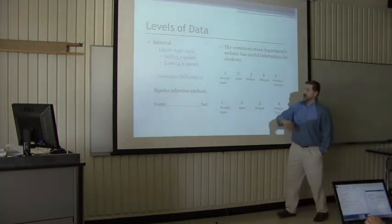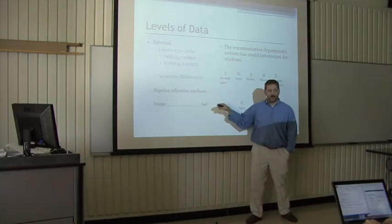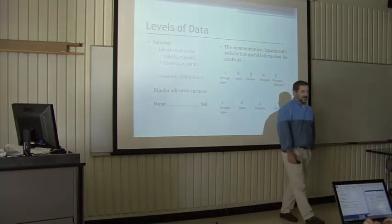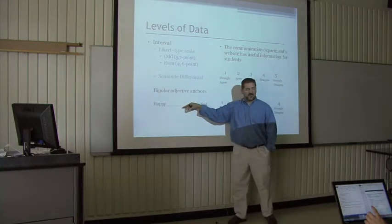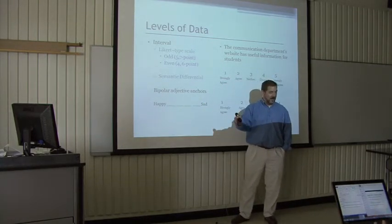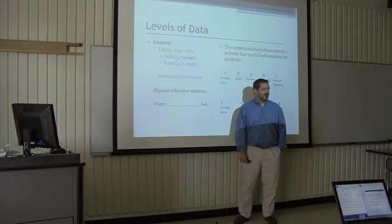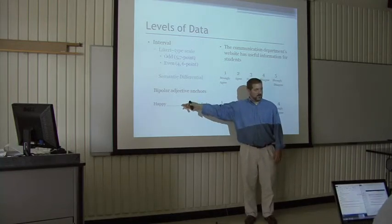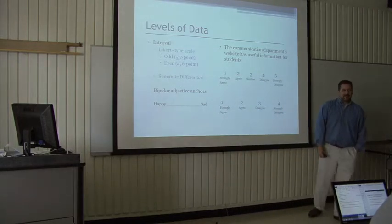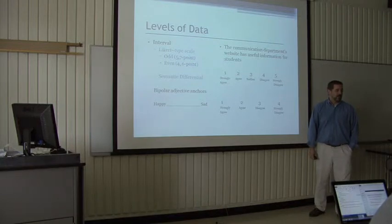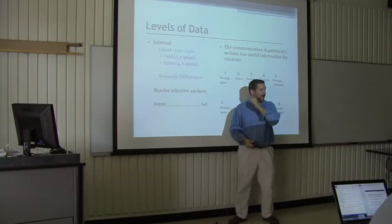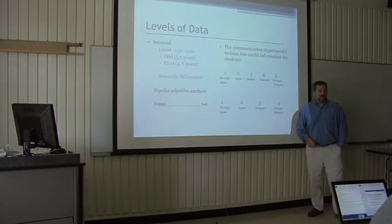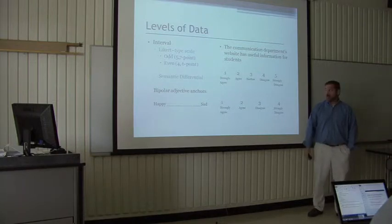Semantic differential does not give you numbers — it just gives you the scale. You have bipolar adjectives like happy or sad and ask where they fall on the scale. My dissertation advisor wanted to try using just a straight line and have respondents mark on it, then he would take a ruler and assign the number based on where they marked. Interesting idea, but the downside is you'd have to measure every single line across hundreds of surveys.